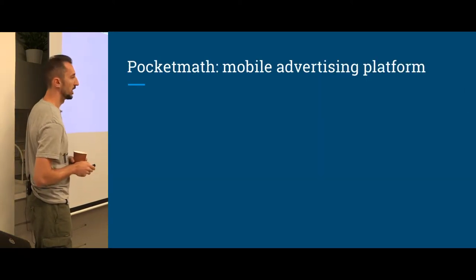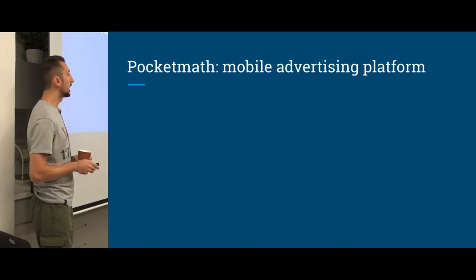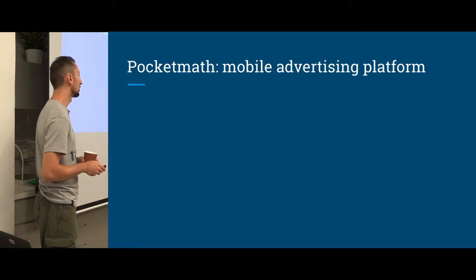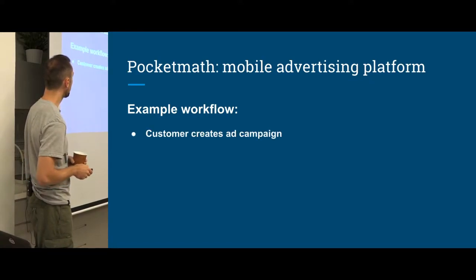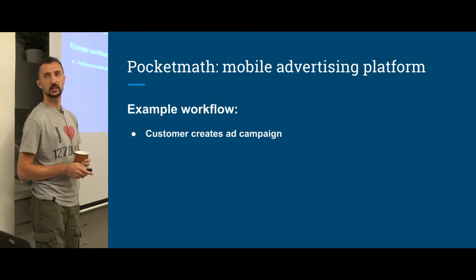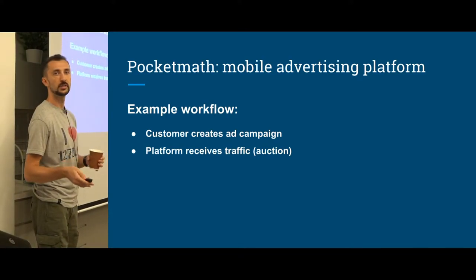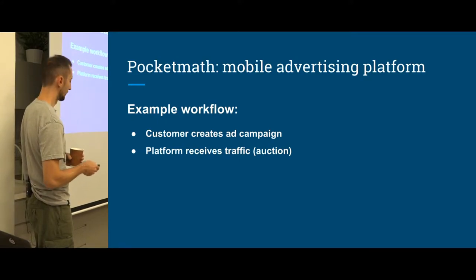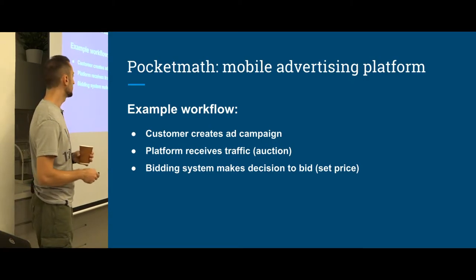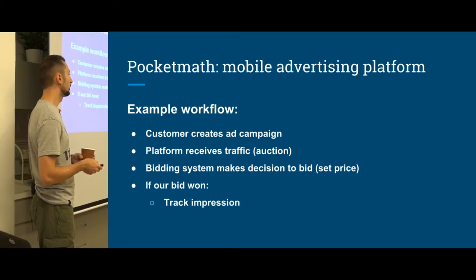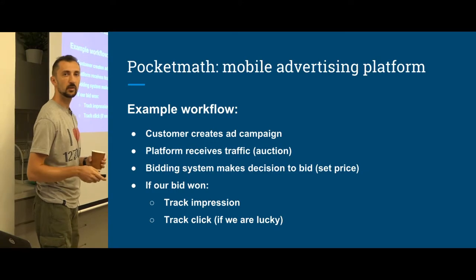We're going to do some real-world tasks. I work in a company called PocketMath, and it's a mobile advertising platform. We have a lot of data in our system, and I decided to use it as an example. We have multiple customers who can create advertising campaigns. Our platform receives traffic — the possibility to actually show an ad to someone on the internet — and we have an auction. Our bidding system makes a decision whether to bid or not and sets a price.